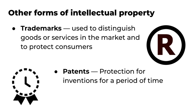Copyright is one type of intellectual property. Intellectual property is the term used for rights that allow creators to control the use of their creative works. One common type of intellectual property is trademarks. A trademark is any name, symbol, figure, letter, word, or mark adopted and used to distinguish goods, services, or establishments from competitors in the market. The holder of a trademark may prevent its use by others if the use would cause confusion among the public.